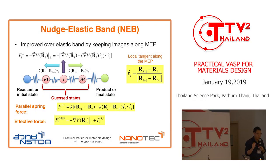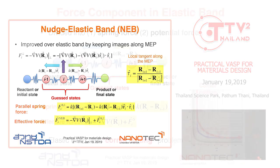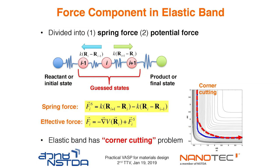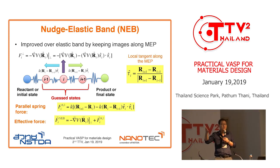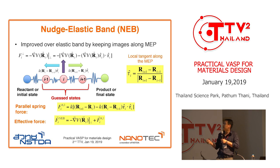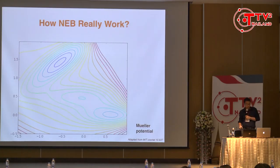People tried to improve this using a slightly modified idea called the Nudged Elastic Band (NEB). In the elastic band method, the spring force alone handles finding the minimum energy path. In the nudged elastic band, you only consider the force acting along the direction of the local tangent of the minimum energy path. If the force tries to push away from the MEP direction, you don't consider it — you only use the force along the MEP direction, defined by the local tangent tau.